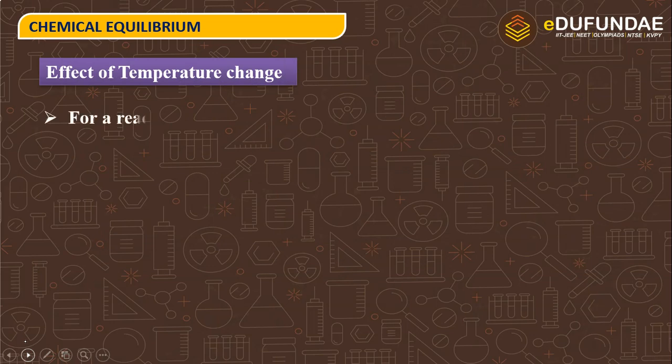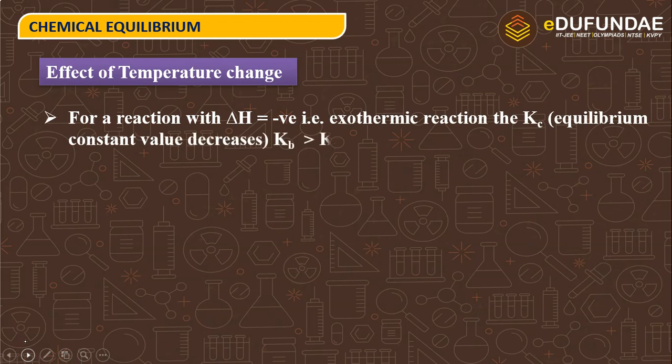Effect of temperature change. For a reaction with delta H equals negative, i.e. exothermic reaction, the Kc equilibrium constant value decreases. Kb is greater than Kf since Kc equals Kf upon Kb.